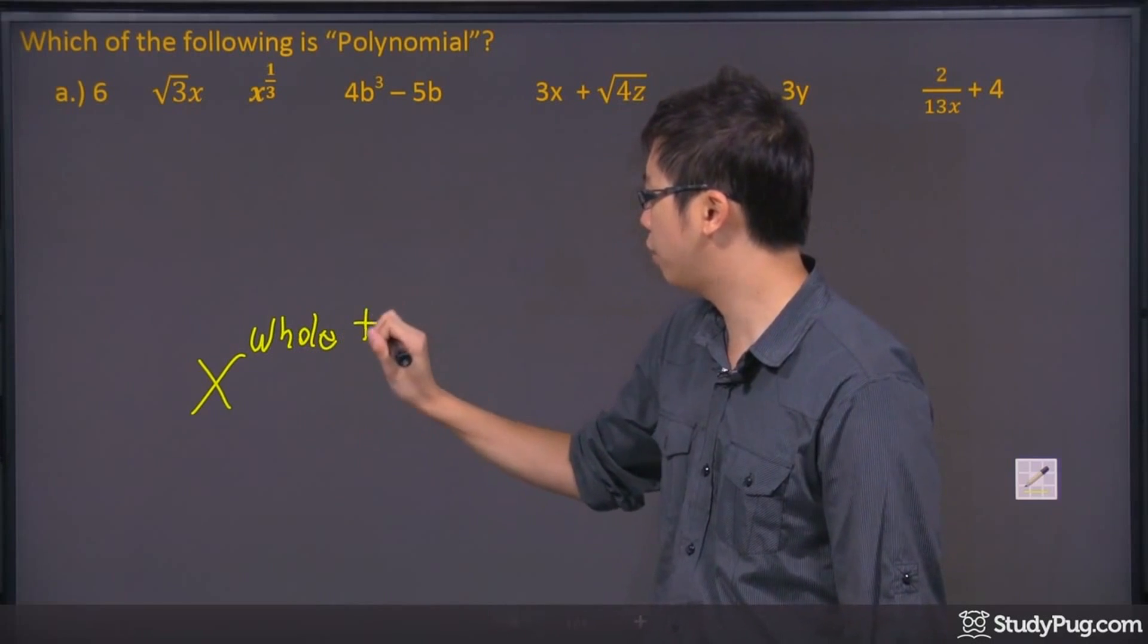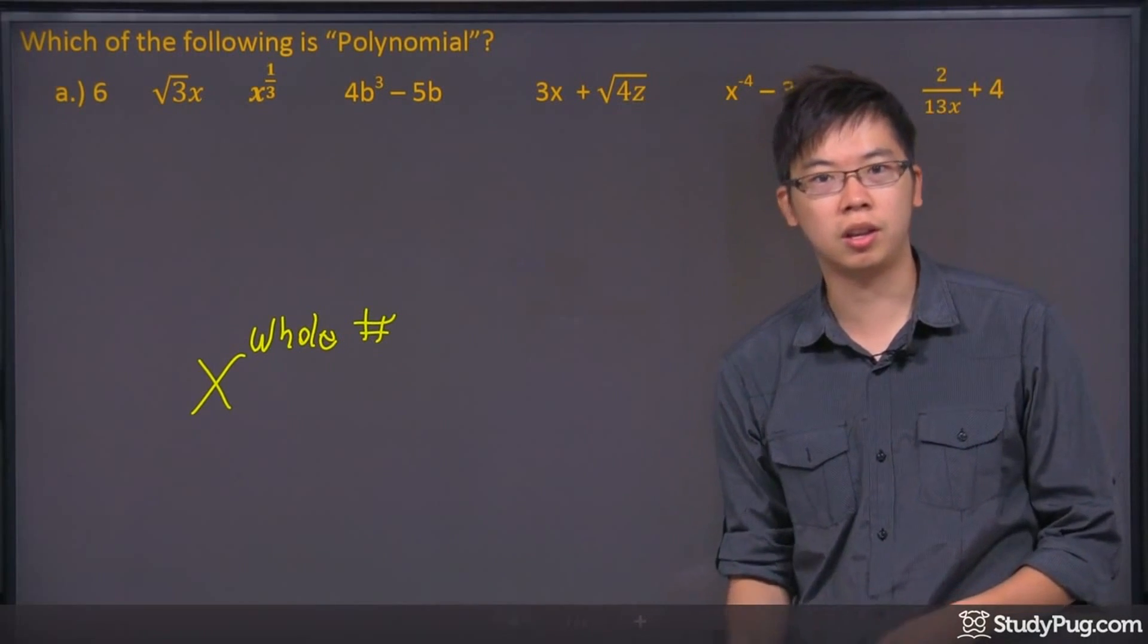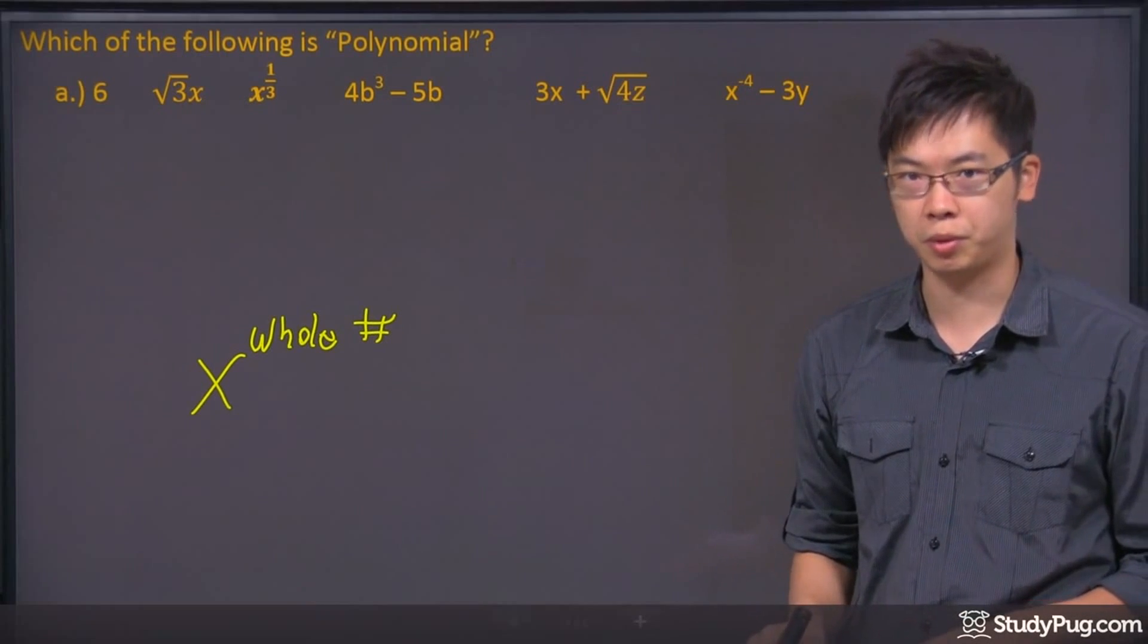So if it's not, for example, if it's a negative, it's like a fraction, then it's not considered as a polynomial.